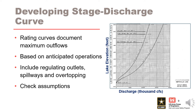Stage discharge information can typically be found in the water management documents. The stage discharge relationship should include the total releases from the dam, including outlet works, spillways, and overtopping if necessary. Overtopping stages, storage, and discharges should be included in the relationship in order to properly model extreme flood events that result in overtopping. For additional details on stage discharge relationships, refer to an inflow volume-based approach to estimating stage frequency curves for dams.